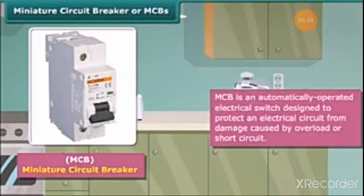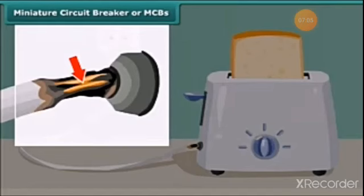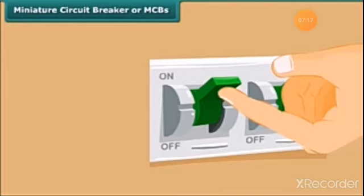So, our next topic is Mini circuit breakers or MCBs. It is an automatically operated electrical switch designed to protect an electric circuit from damage caused by overload or short circuit. Whenever there is a fault in a circuit, MCB interrupts continuity to discontinue electrical flow immediately. It can be reset to resume normal operation.